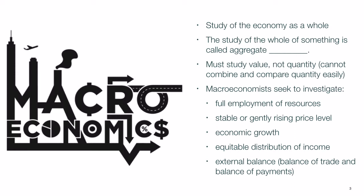We'll get more into that in our next topic with aggregate demand and aggregate supply. The important takeaway is we're looking at the economy as a whole, and we use the word aggregate for that. When we study macroeconomics, economists are looking at unemployment and employment of resources, whether the price level of goods in general is going up or down, whether the economy is growing and how we'd measure that, and how that growth and income is distributed among people in the economy. We can affect those changes through things called fiscal, monetary, and supply-side policy, which will come up throughout this unit.